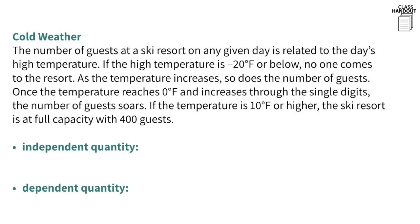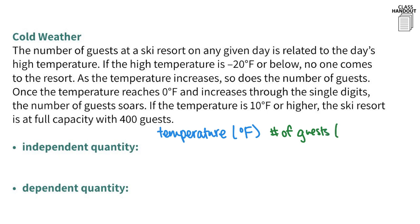The number of guests at a ski resort on any given day is related to the day's high temperature. If the temperature is negative 20 degrees or below, no one comes; as it increases, so do guests; and at 10 degrees Fahrenheit or higher, the resort is at full capacity with 400 guests. The two quantities are temperature, measured in degrees Fahrenheit, and number of guests. The number of guests depends on the temperature, so number of guests is the dependent quantity and temperature is the independent quantity.